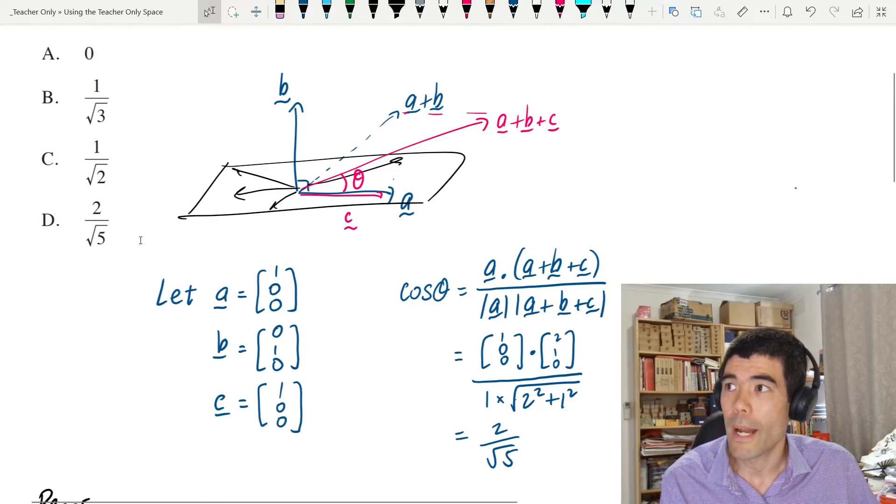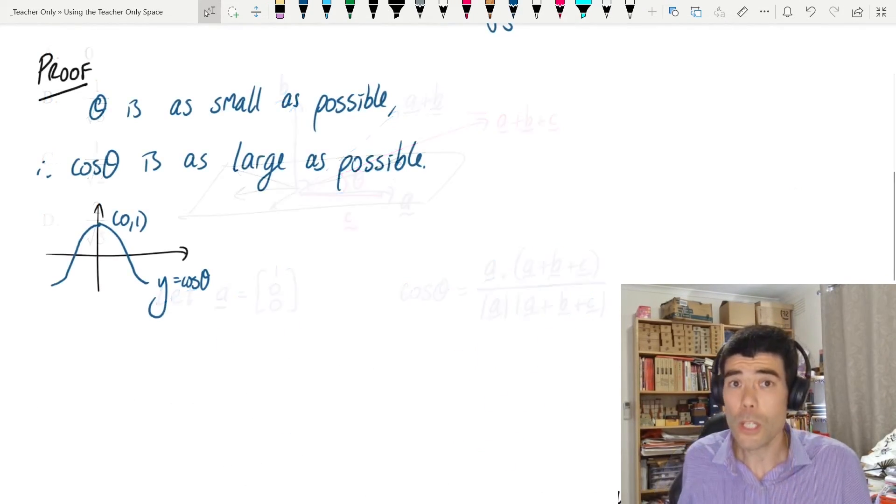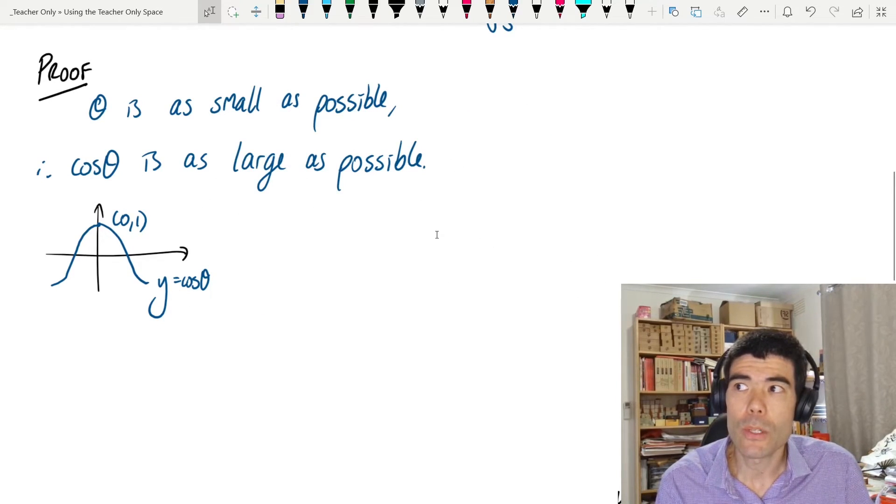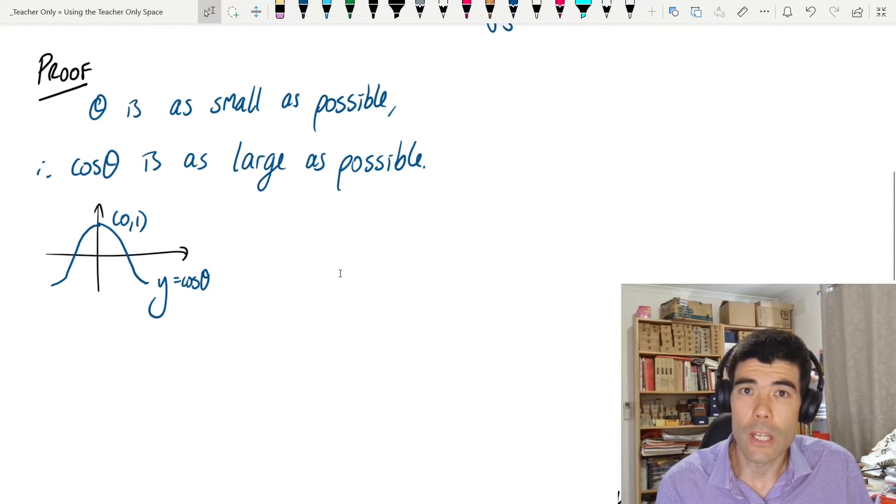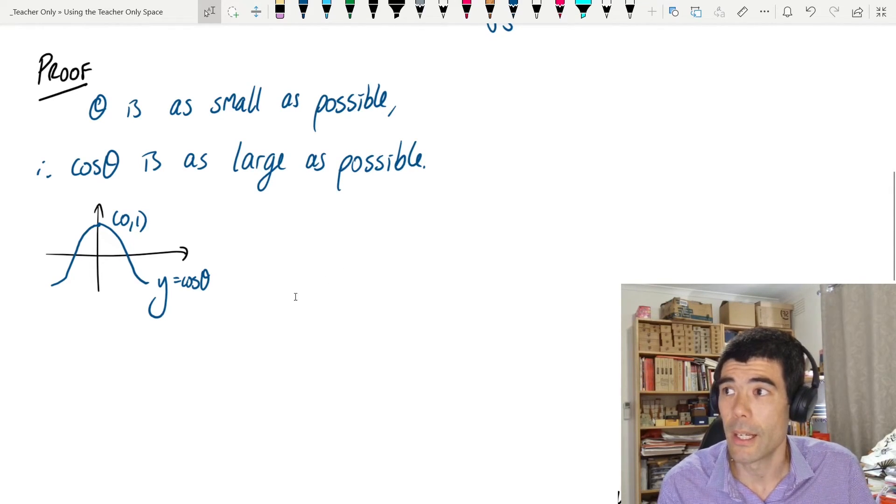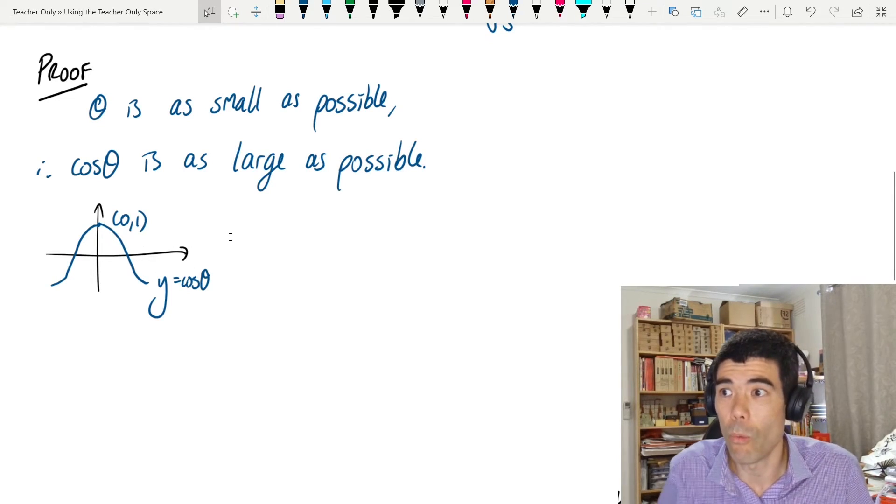But let's now talk about how we could prove this a little bit more rigorously. So we want to make theta as small as possible, which means we want to make cosine theta as large as possible. If you think about a graph of cosine theta, as theta gets smaller and smaller, cosine theta approaches its maximum of 1.